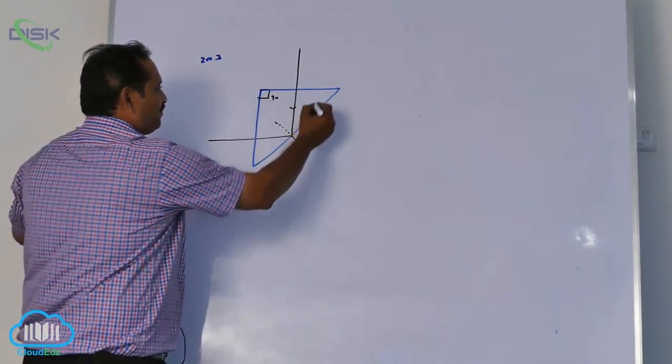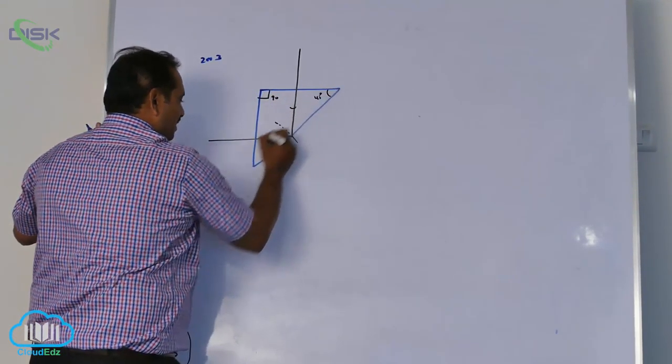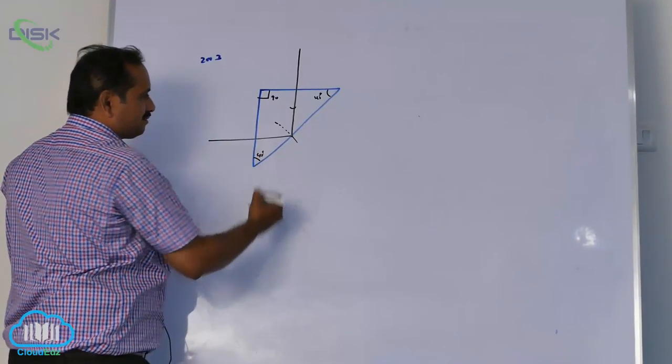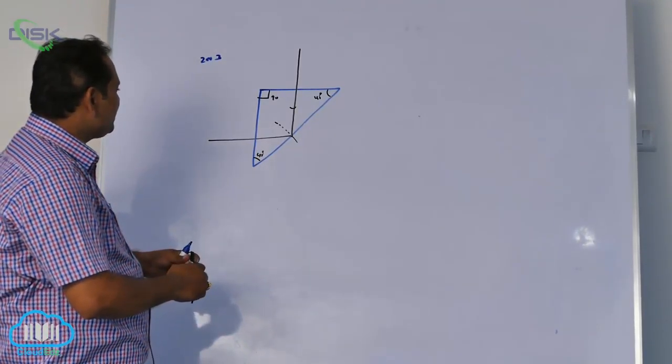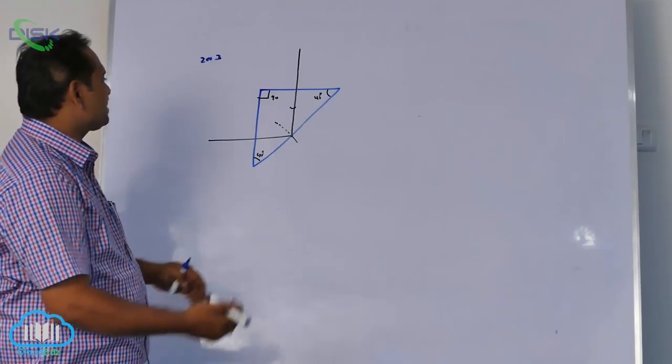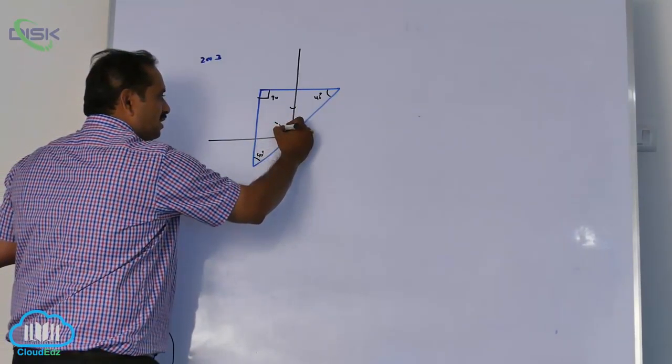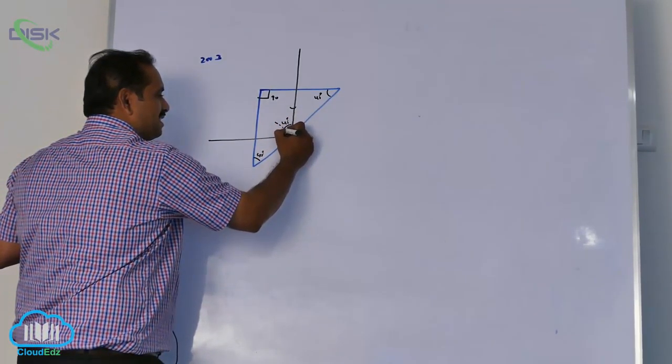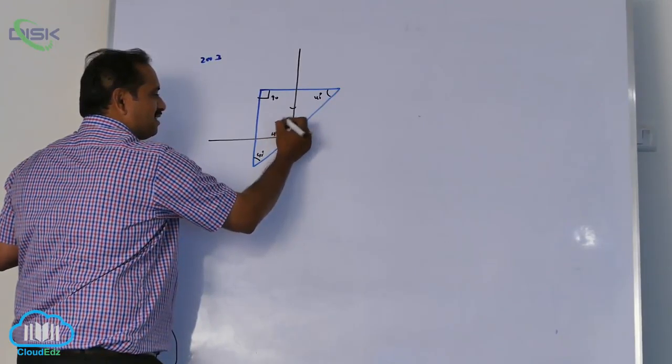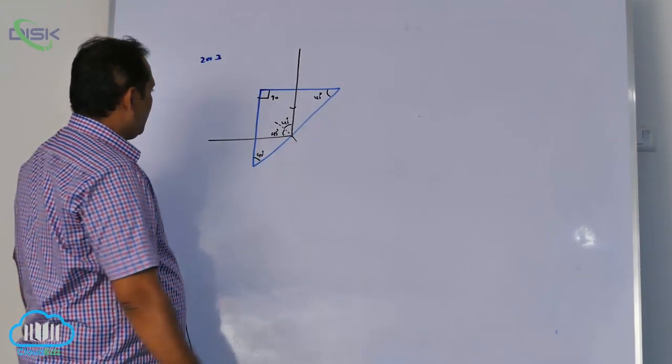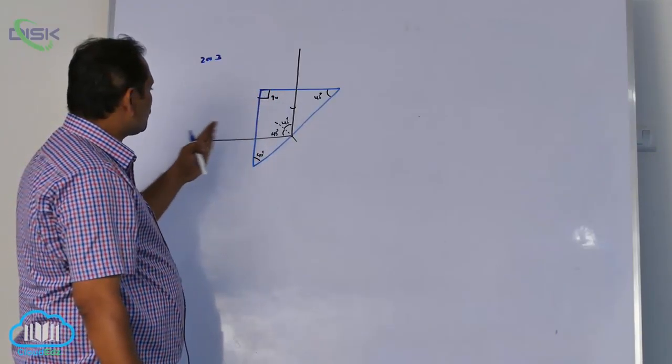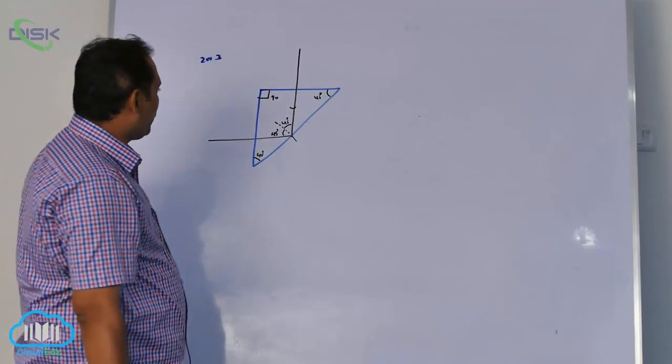What they ask here is the refractive index of the prism. This is 45°, this is also 45°. You can observe that light is totally internally reflected at this point to satisfy this condition at 45°.